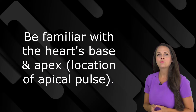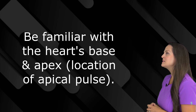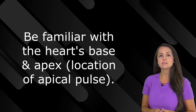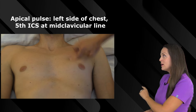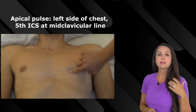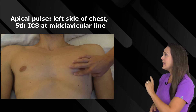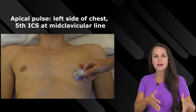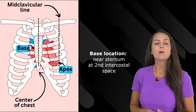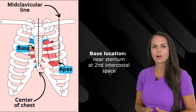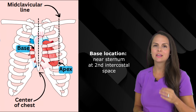In nursing you want to be familiar with the base and the apex, especially the apex, because the apex is the place where the apical pulse is taken — this is the point of maximal impulse, hence the strongest contraction. Whenever we give medications like digoxin we want to measure that apical pulse beforehand. The apical pulse is typically located on the left side of the chest at the fifth intercostal space at the mid-clavicular line, while the base of the heart is located right behind the sternum at the second intercostal space.